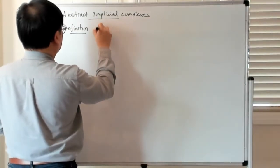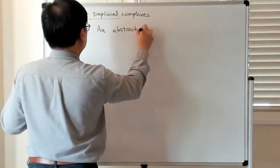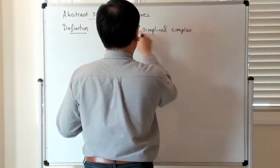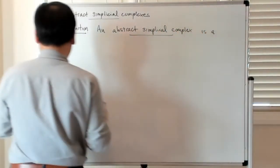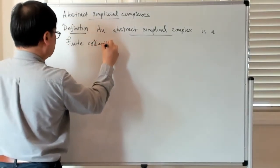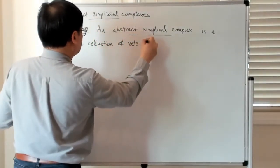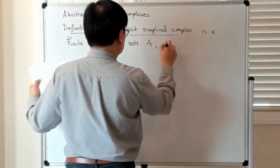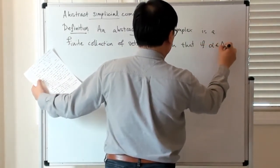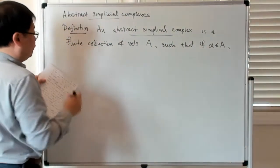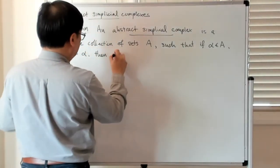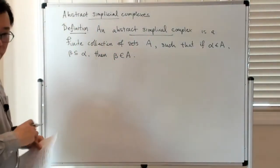An abstract simplicial complex is a finite collection of sets A such that if alpha is in A and there's a subset of alpha denoted by beta, then beta is also in A. So it's closed under subsets.